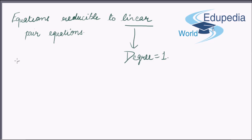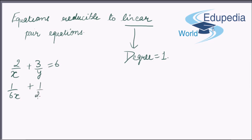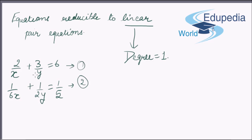Say for example we have 2/x + 3/y = 6 and 1/(6x) + 1/(2y) = 1/5. Clearly it is not a linear pair because none of the equations has degree equal to one.